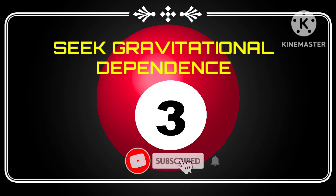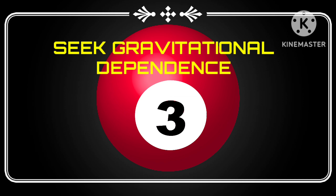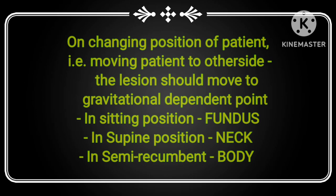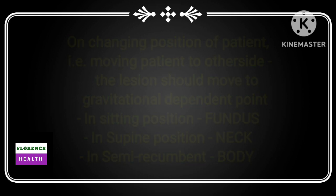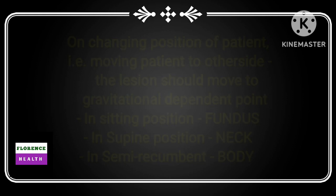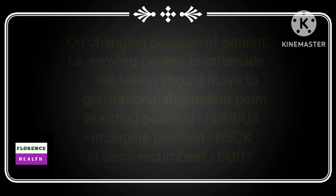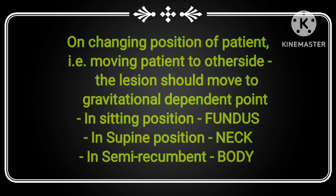Let us discuss about seek gravitational dependence. Seek gravitational dependence means that on changing the position of the patient — that is, on moving the patient to the other side — the lesion should move to the gravitationally dependent point. In the sitting position, the dependent point of the gallbladder is the fundus. In the supine position, the dependent point is the neck of the gallbladder. In the semi-recumbent position, the body of the gallbladder is the dependent point.